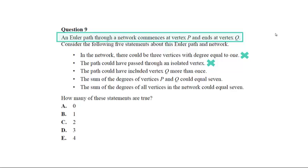The path could have included vertex Q more than once. Now we have to finish at Q, but that doesn't mean that if it say had a degree of 3, we could have entered Q, left again, and then returned for the final endpoint. So that's a possible correct answer.